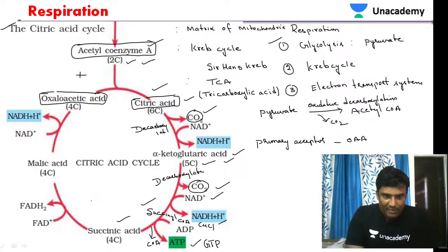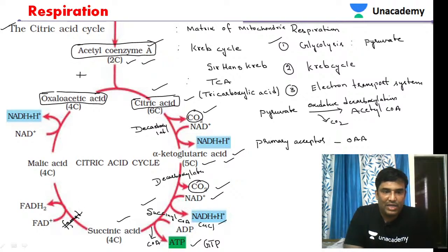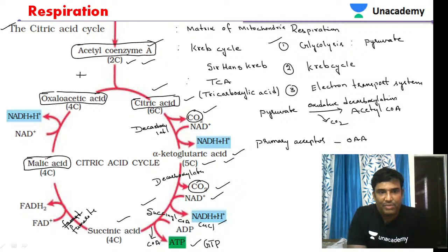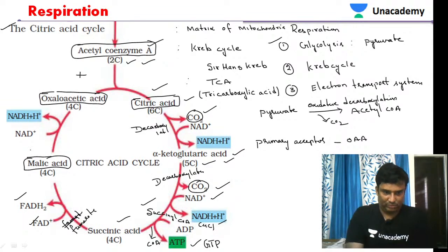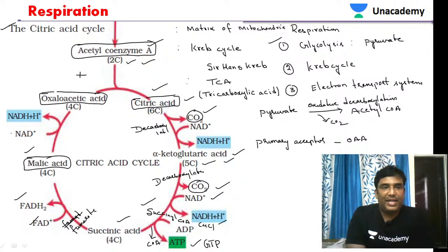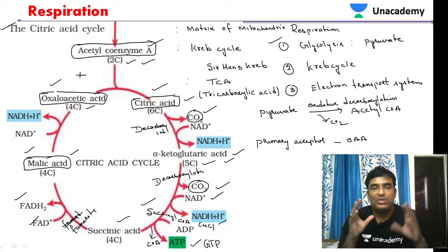Succinic acid is then converted into fumarate, and fumarate is converted into malic acid. During conversion of fumarate into malic acid, FAD+ is reduced to FADH2. Then malic acid, also a four-carbon compound, is further reduced back to oxaloacetic acid, and the cycle continues.